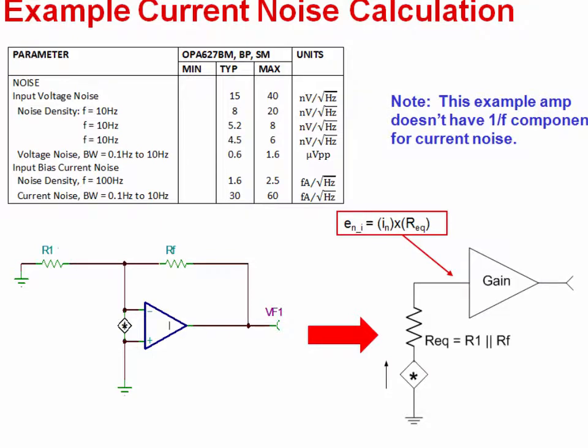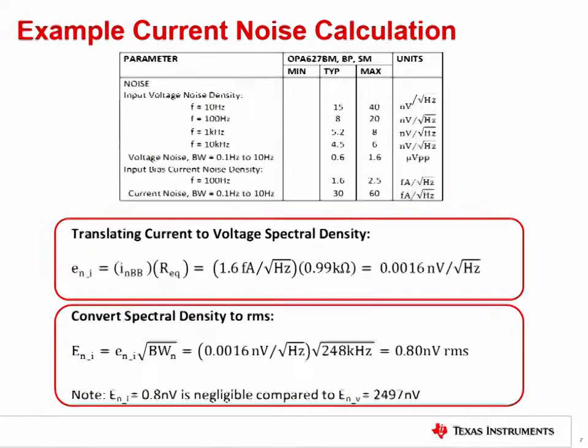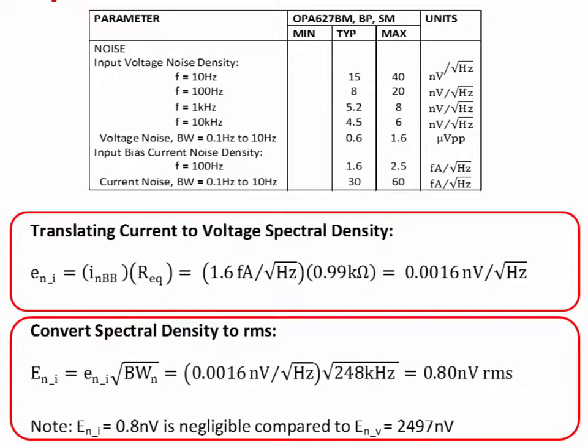The current noise is multiplied by the equivalent resistance to generate an input referred noise voltage. Let's look at the numbers for this example. So in this example, the noise current density is very small, at just 1.6 femtoamps per square root hertz. The equivalent input resistance is also small, at just under 1 kilo-ohm.